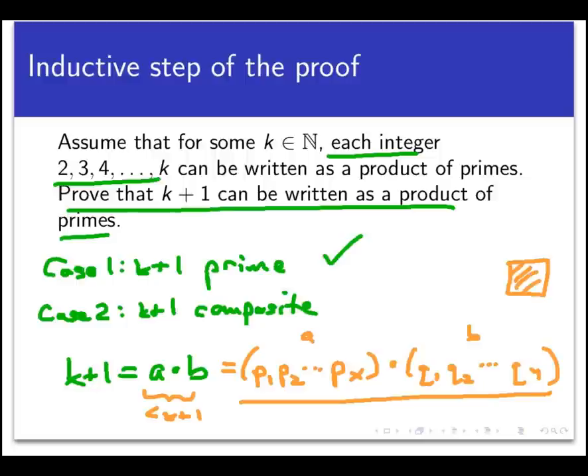We have written k plus 1 as a product of prime numbers. So just like with the example of 2001, if we knew the factorization of 667, then we can get the factorization of 2001 just by importing that factorization.